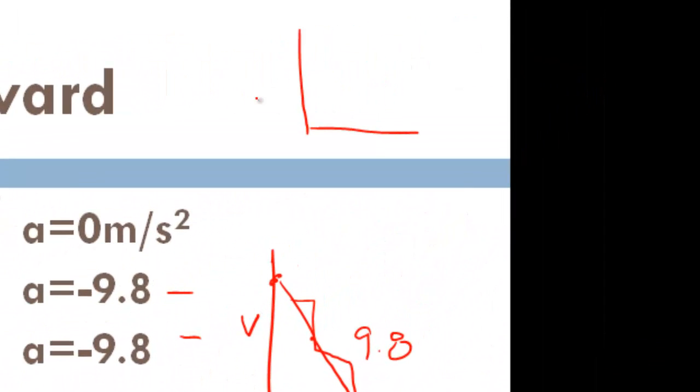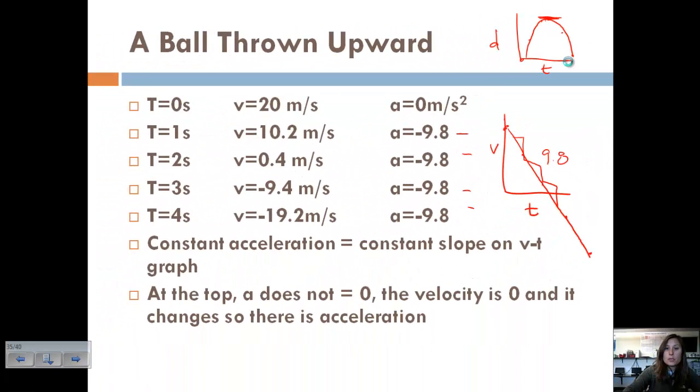So if we did like a displacement time graph, say we started at displacement of zero, basically what you would see is kind of a parabola shape where the displacement would be zero. And then here you can see our slope is zero. And remember that represents velocity. So at the top of an object's path of motion, the velocity is zero. And then we're coming back down. So two different graphs.